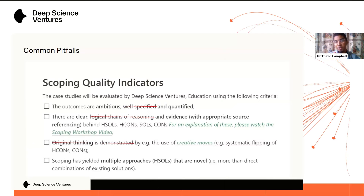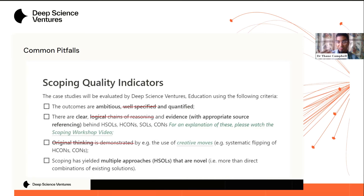A common mistake is where hypothesized solutions are not well technologically specified. A bad example would be suggesting that we invest more in biological research — there's no technological specification on that at all. It's true that investing in research could unlock progress, but we're trying to be very clear and focused on the technologies that can be built and leveraged.